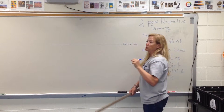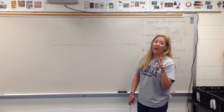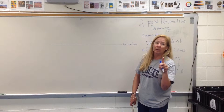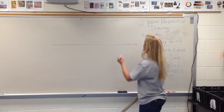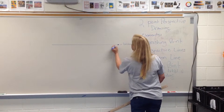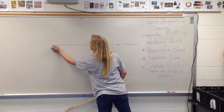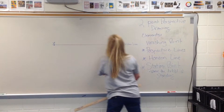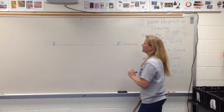Since we're doing two-point perspective drawing, how many vanishing points do we have? Two. Good. One-point perspective drawing you have one vanishing point; with two-point, you have two vanishing points.